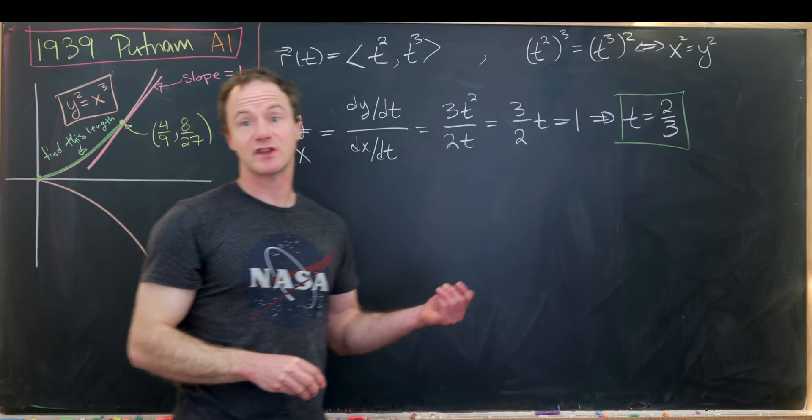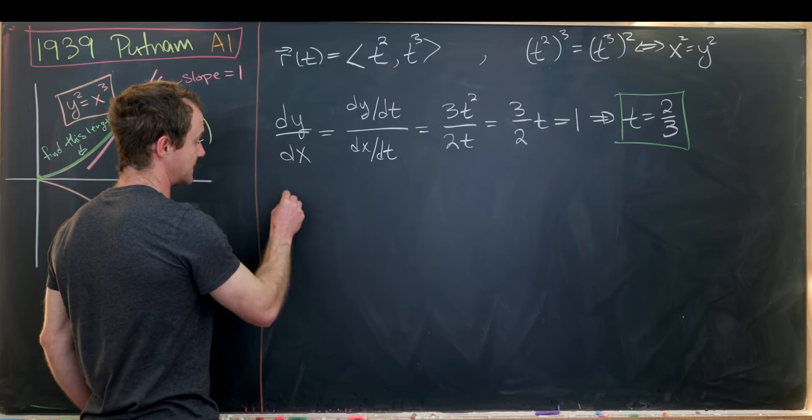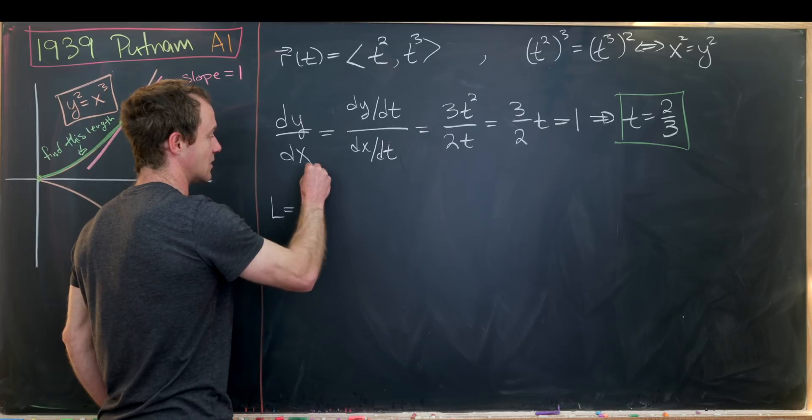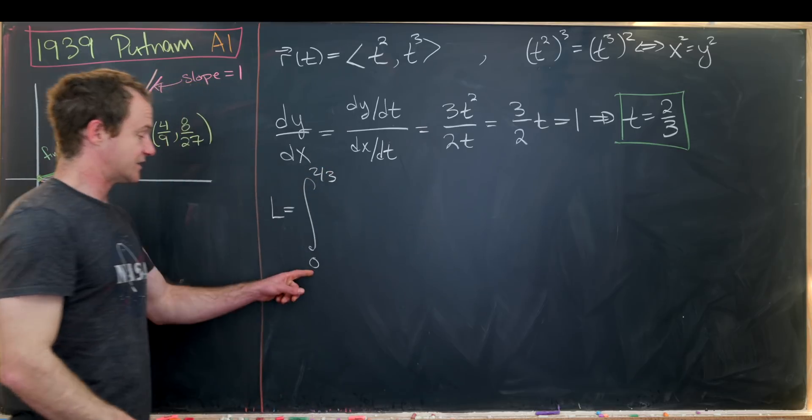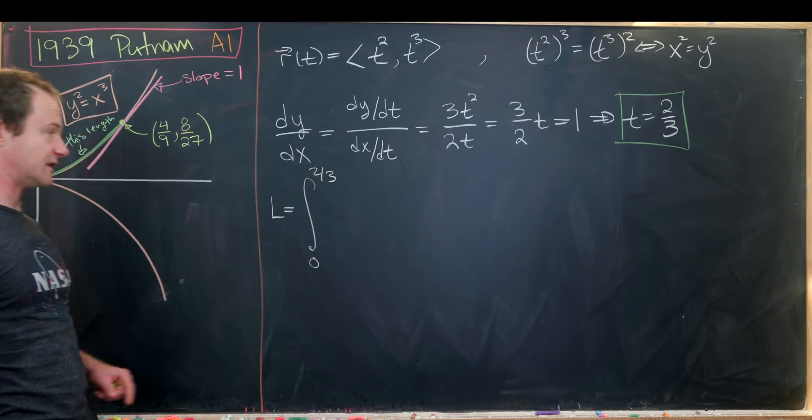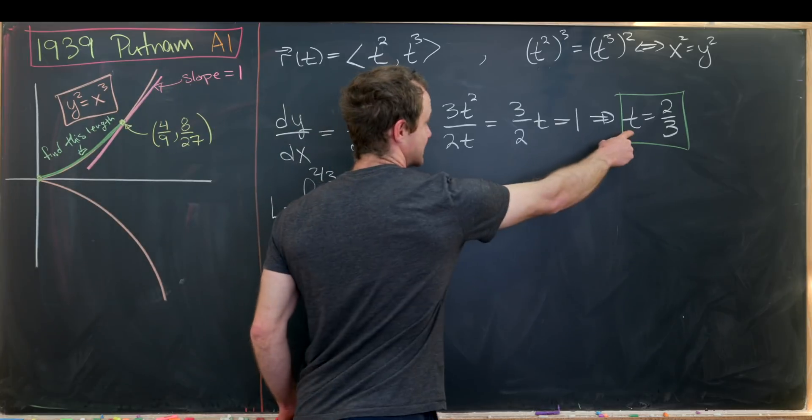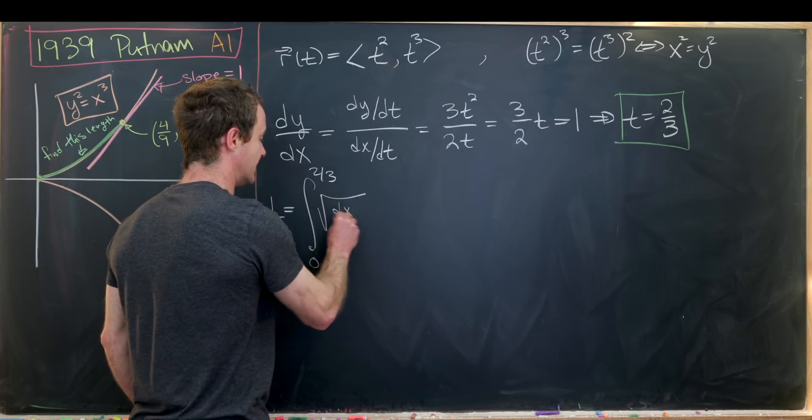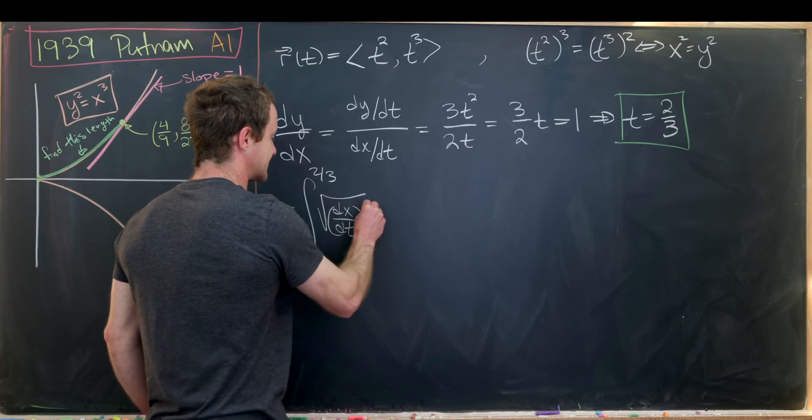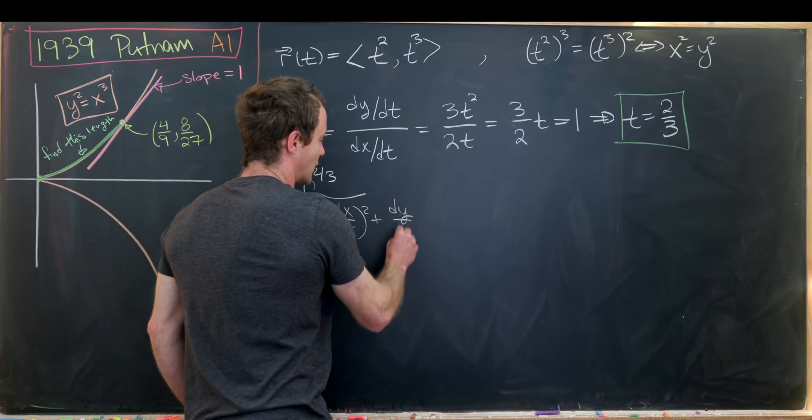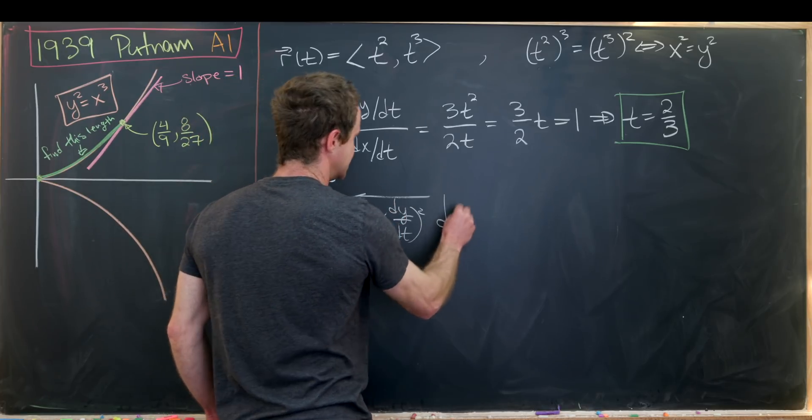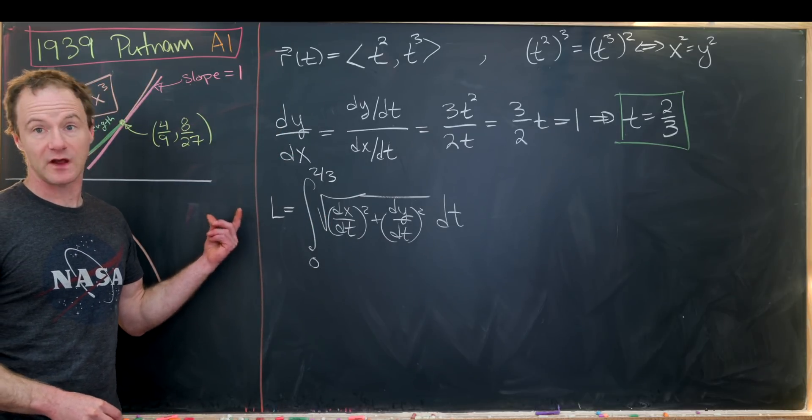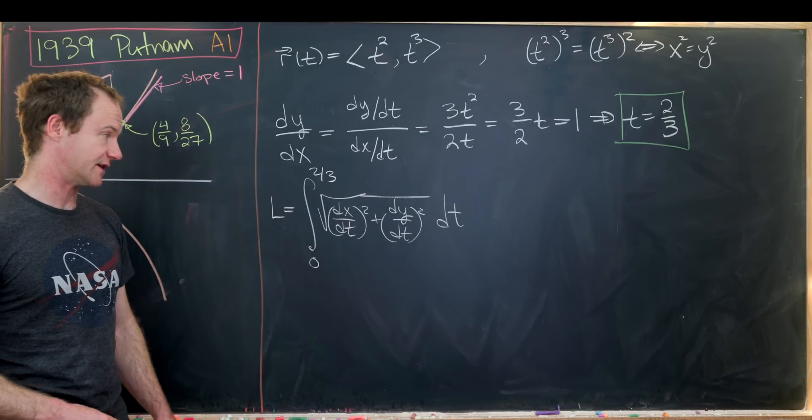We'll just use the arc length formula for a parametric curve. It'll be the integral from 0 to 2/3, so 0 because we've decided to start at the origin, 2/3 because that's the point where we have a slope of tangent line of 1, and then we'll have the square root of dx/dt squared plus dy/dt squared dt. That's a fairly well-known formula for the arc length of a parametrically defined curve.